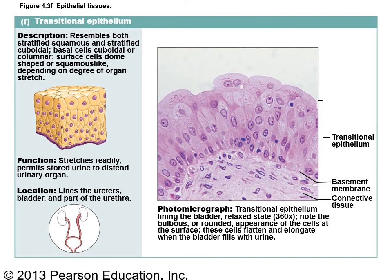Transitional epithelium has multiple layers with cells that are rounded and almost dome-shaped. This is found primarily in the urinary tract — in the ureters and in the bladder — and it can stretch. When the bladder is filling, the cells look more elongated; when the bladder is collapsed, they look more dome-shaped, transitioning depending on what's going on.